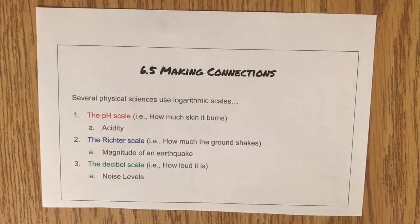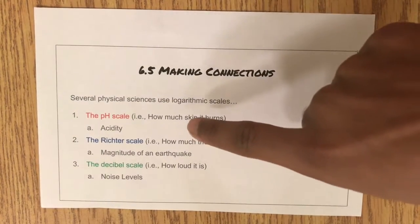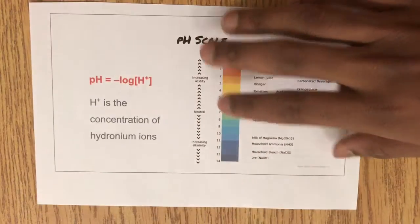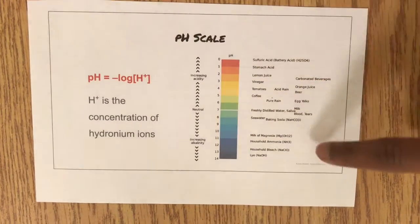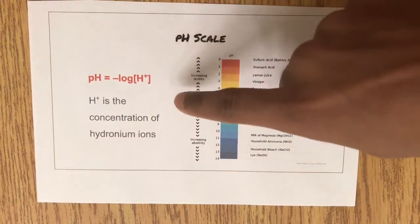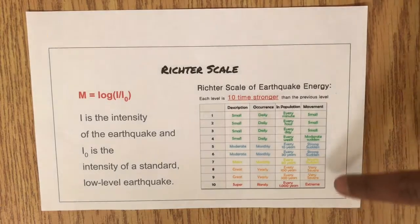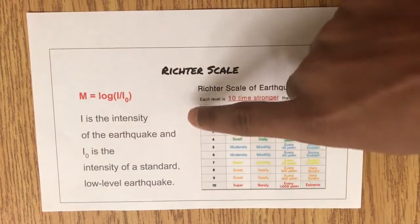Section 6.5 makes connections to several physical sciences, such as the pH scale, the Richter scale, and decibel scale. The pH scale uses pH equals negative log h, where h is the concentration of the hydronium ions. The Richter scale uses m equals log i over i0, where i is the intensity of the earthquake, and i0 is the intensity of a low-standard-level earthquake.